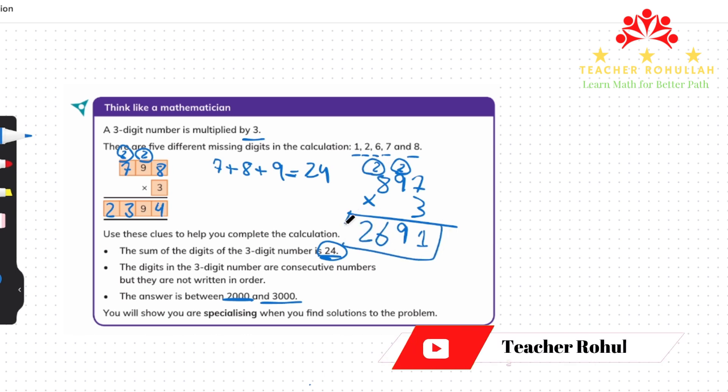Why? Because we have 1 here, 6 here, and 2 here. And the answer is between 2,000 and 3,000. So this is the correct answer.